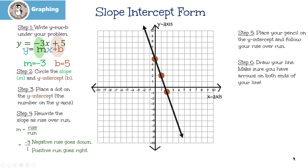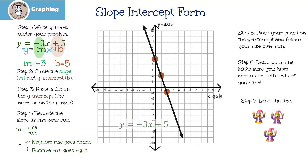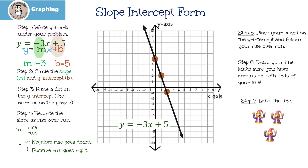Step 6 is to draw the line. I forgot to mention in the last one that you always have to have arrows at the end of each side. Why? Because it goes on to infinity — it just keeps going and going. Our last step, step 7, is to label our line. It doesn't matter where you label it as long as it's close to your line. It may seem silly right now, but when we start graphing systems of equations — more than one graph — we're going to need to know which is which. So we need to start practicing now.